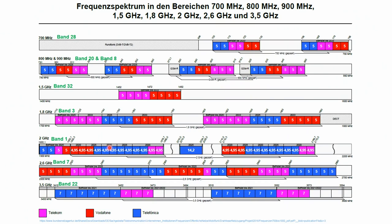Future 5G frequencies aren't listed yet, but all currently valid frequencies are. These are quite a lot: 700 MHz, 800 MHz for LTE/4G, 900 MHz where legacy GSM runs, and Band 32 at 1.5 GHz.